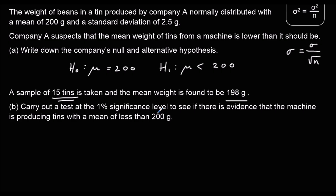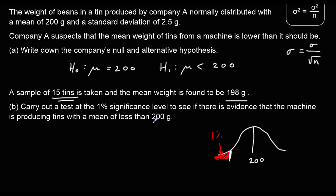We're going to carry out a test at the 1% significance level to see if there's evidence that the machine is producing tins with a mean of less than 200. We've got a normal distribution with 200 in the middle, and we're looking for the most extreme 1% of values. If 198 lies within the most extreme 1%, we will accept the alternative hypothesis; if it doesn't, we'll accept the null hypothesis. We can work out the critical value and then see if it's bigger or less than 198.